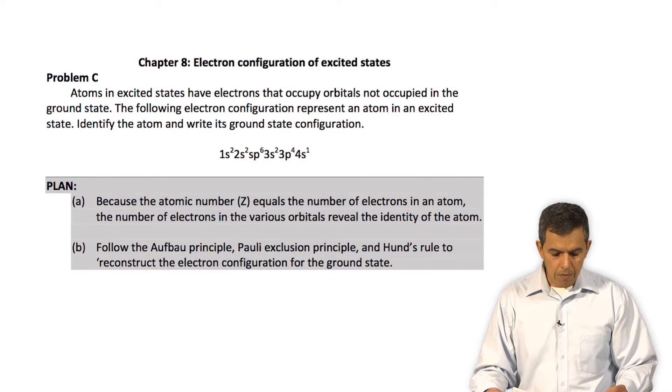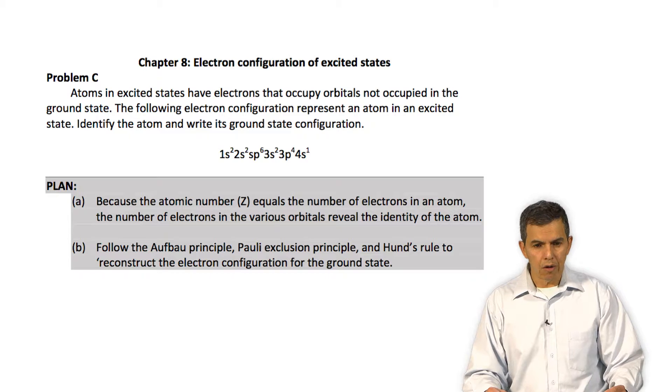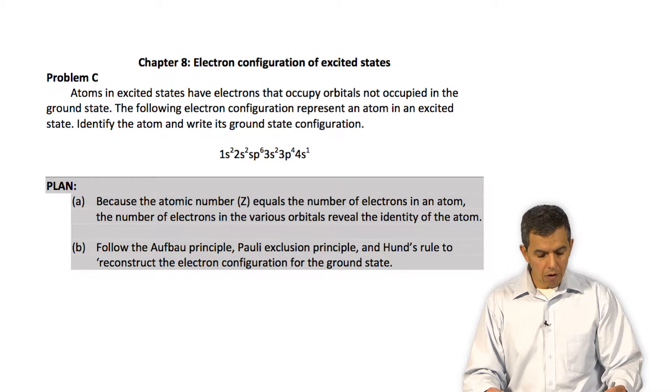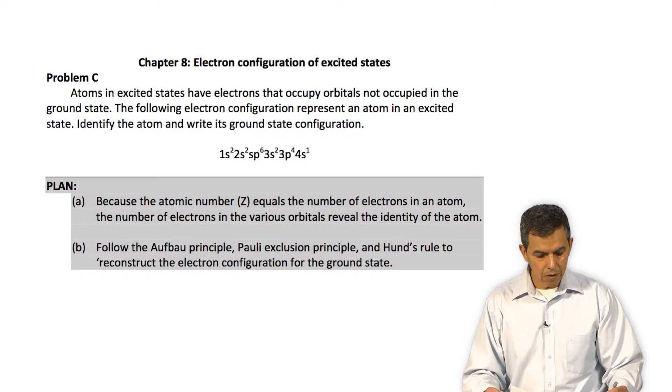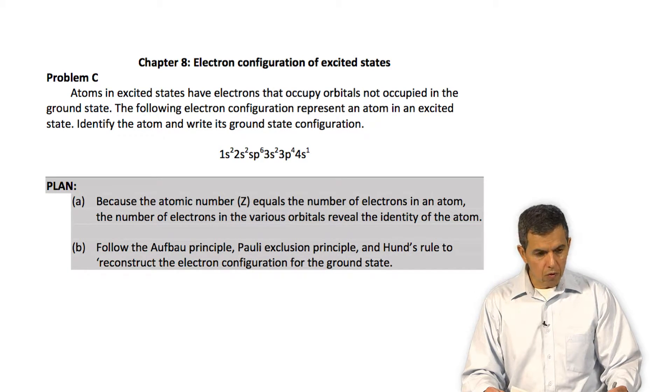So to solve this problem, the key feature here is to identify the number of electrons that we have in this particular atom, because that also gives us the number Z, which is the atomic number. Then we are going to look at how many electrons are present and rewrite the electron configuration of the ground state.